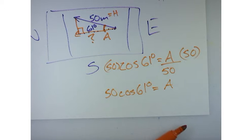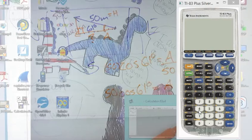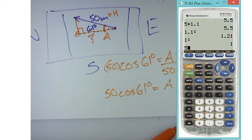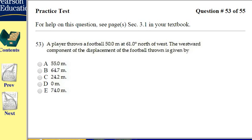What's that? Does anybody know? I'm going to find out. Well, make sure I'm in degree mode. So if I say 50 times cosine of 61, I get 24.24. Now, here's the one thing I want to point out.